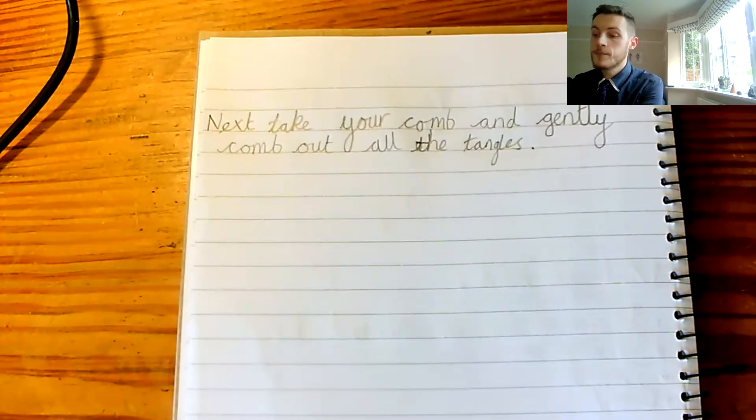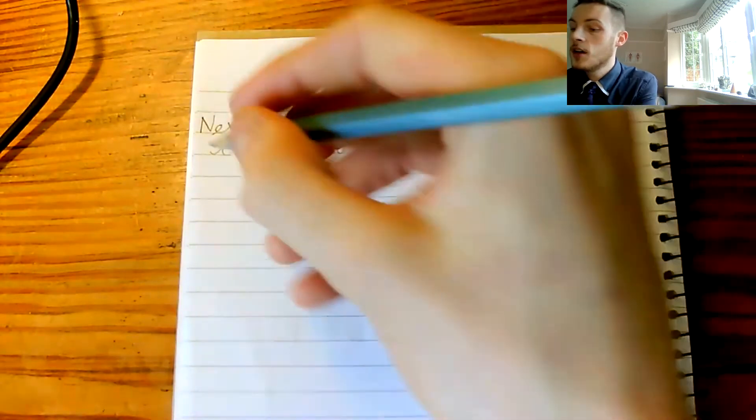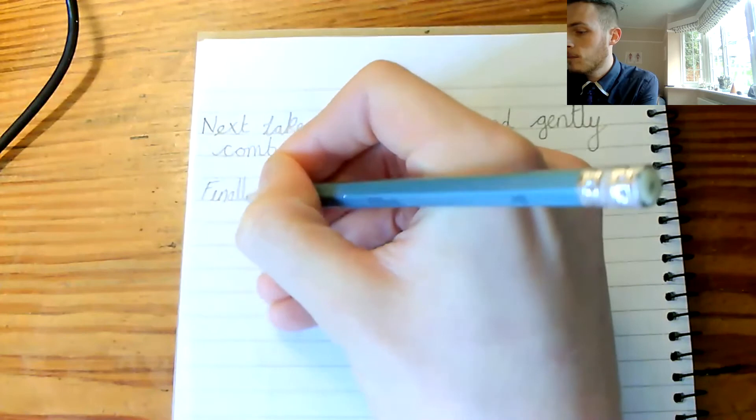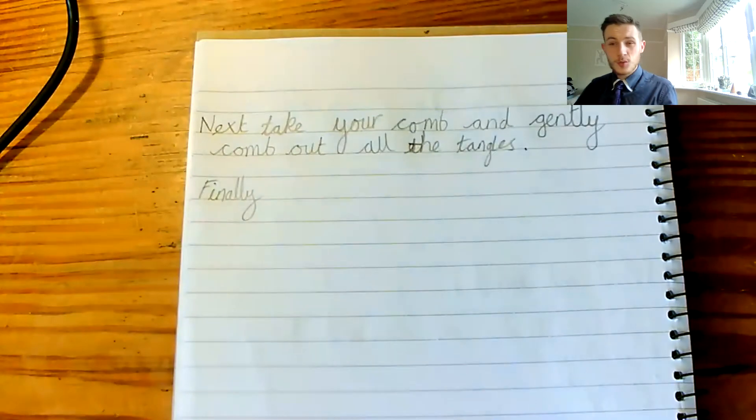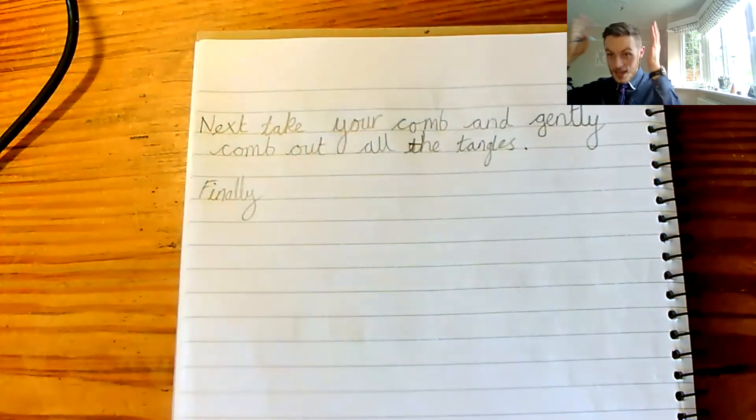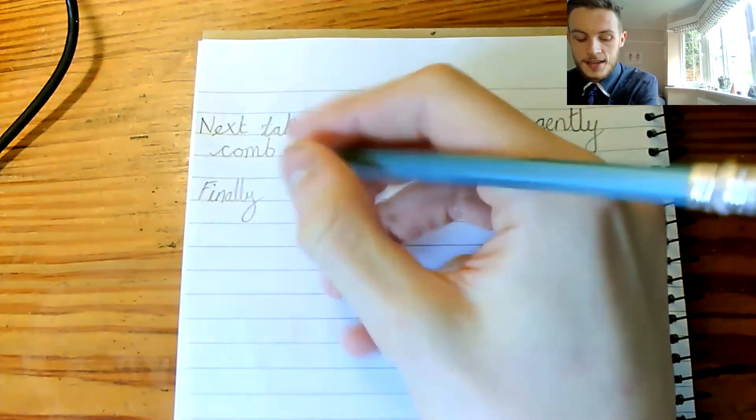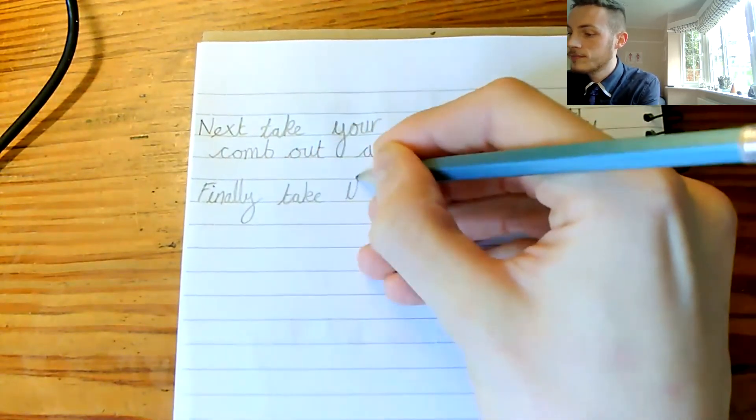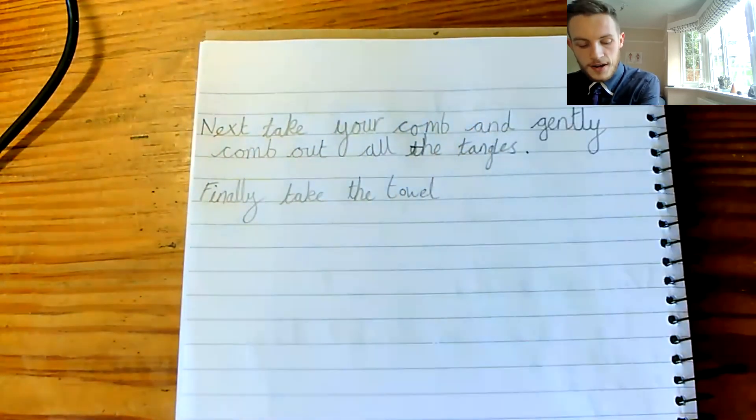We've now got one last sentence we're going to do. So, if it's our last sentence, we know our time sentence starter must start with a capital finally. Finally, and what does she do last? After she's combed her hair out, she gets a towel and she rubs her hair to make sure it's all dry. Finally, take the towel.